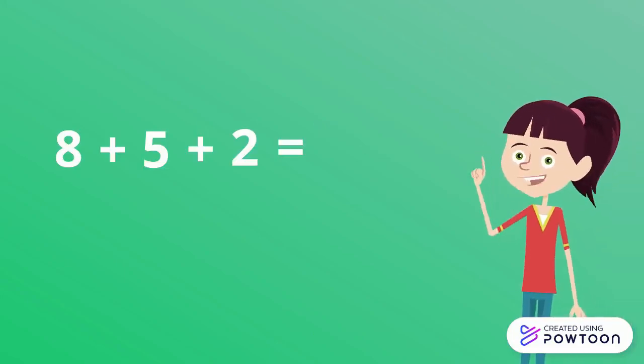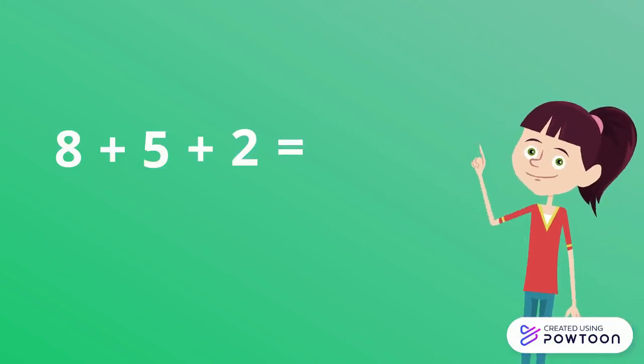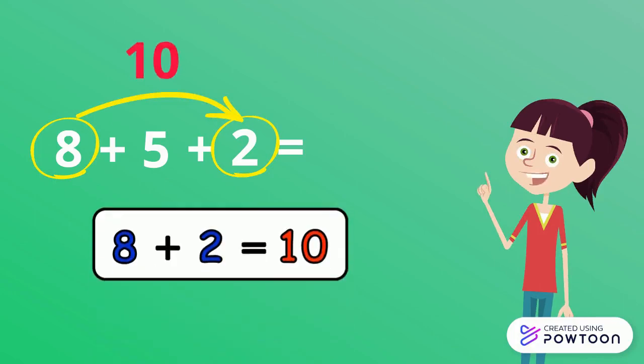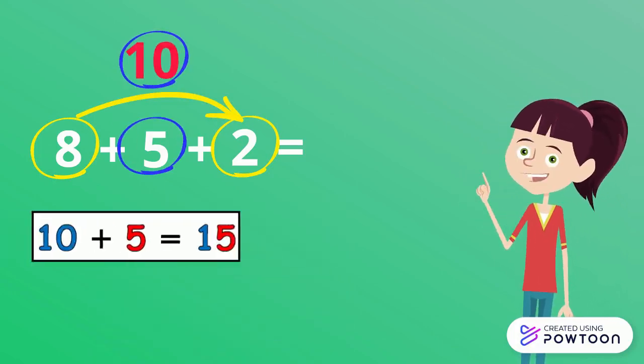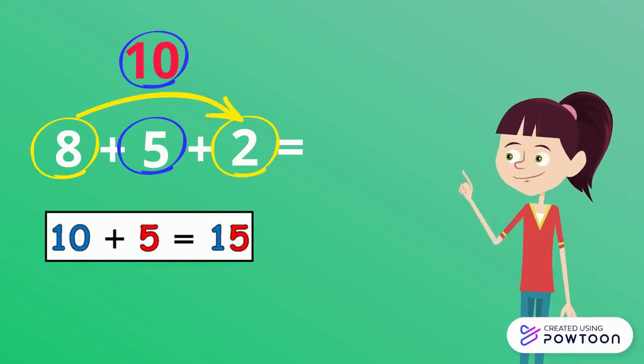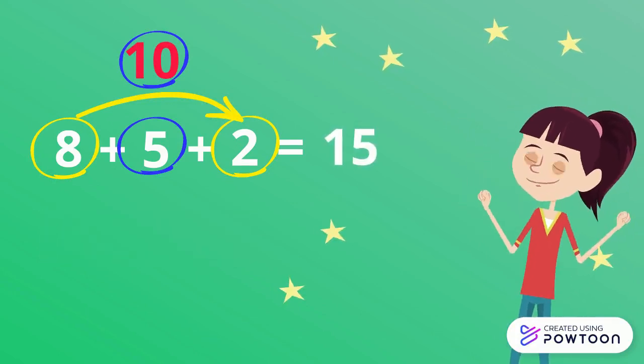Another example. 8 plus 5 plus 2. 8 plus 2 equals 10. Now 10 plus 5 equals 15. So, 8 plus 5 plus 5 equals 15. It's so easy.